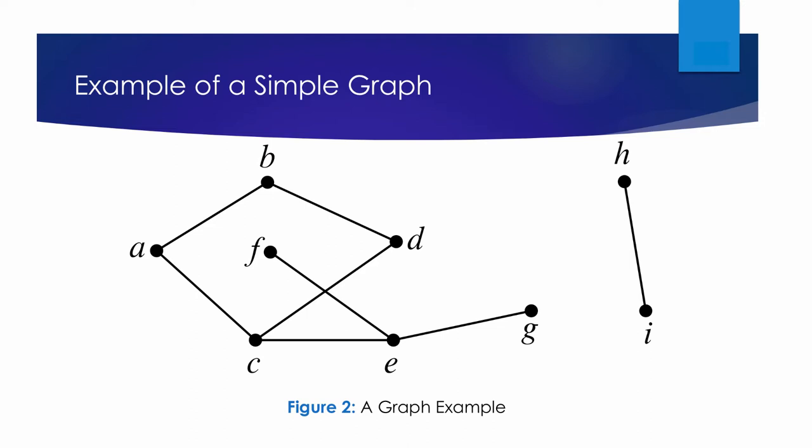It is possible for a vertex to have a degree of zero, in which case it is not adjacent to any other vertices. A simple graph does not need to have any edges at all; in this case, the degree of every vertex is zero. But it does need to have at least one vertex.